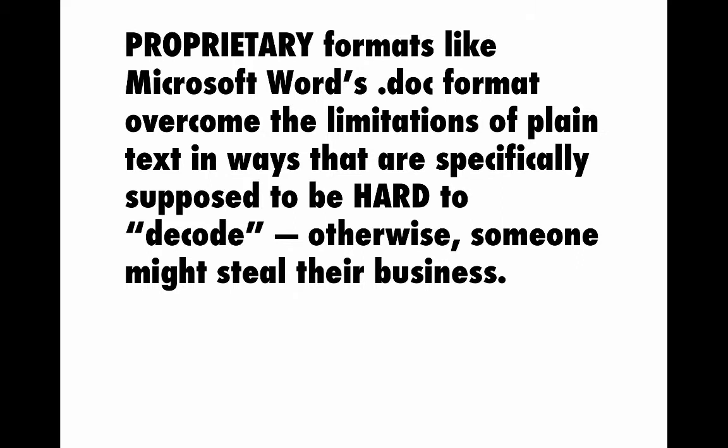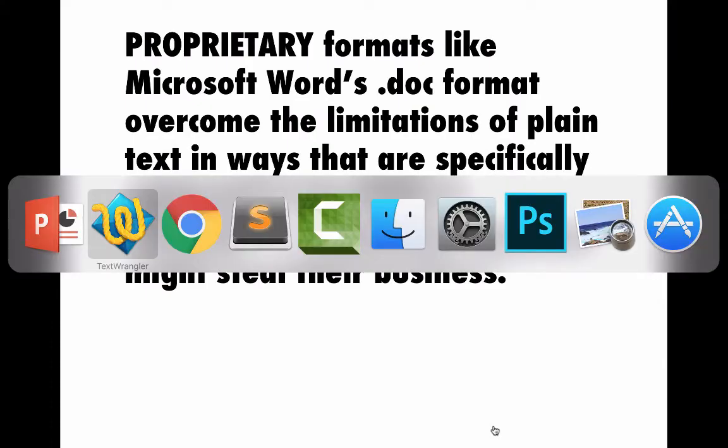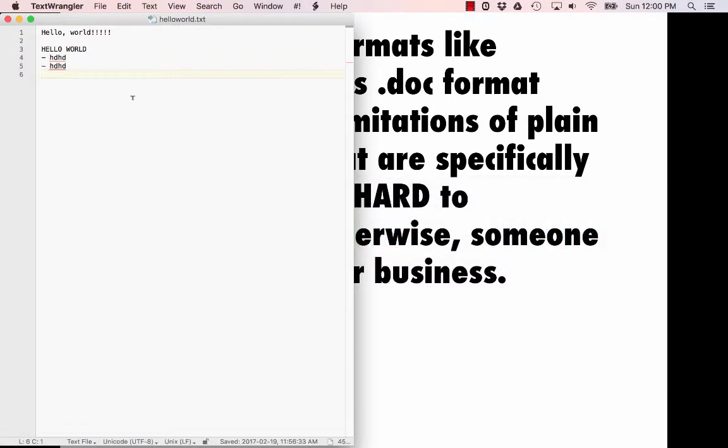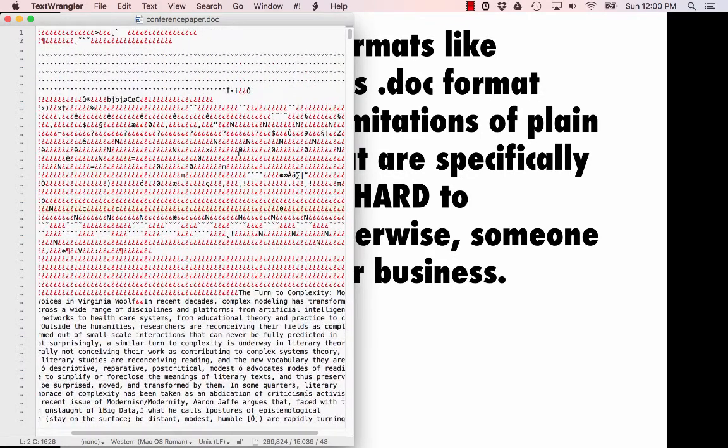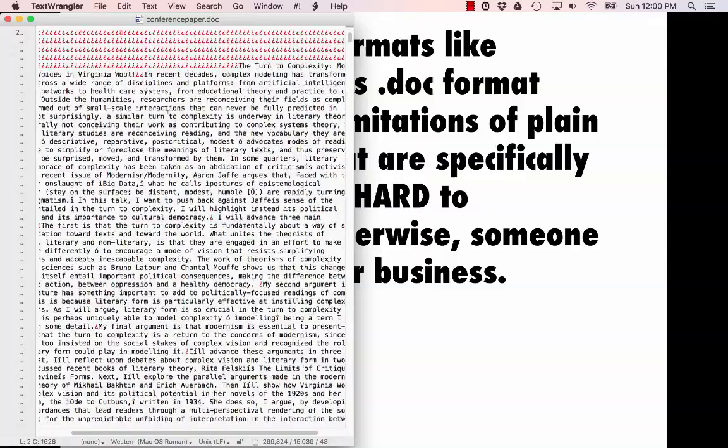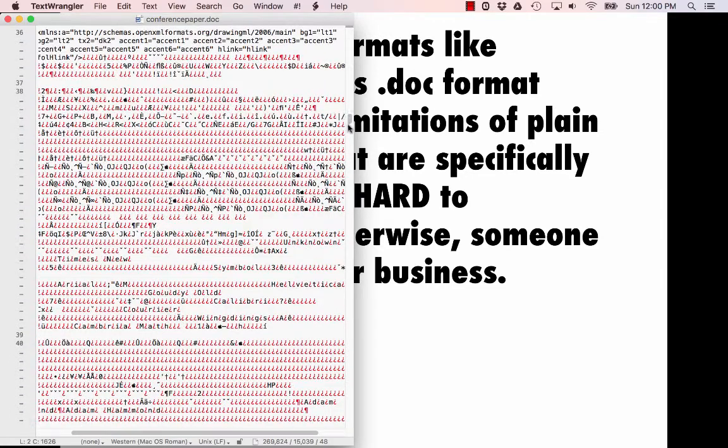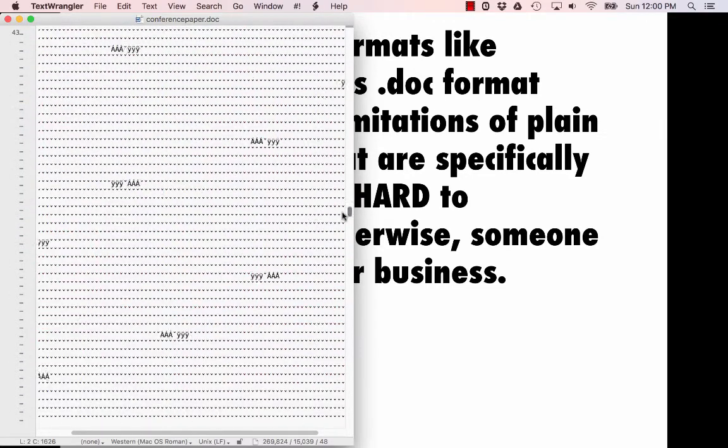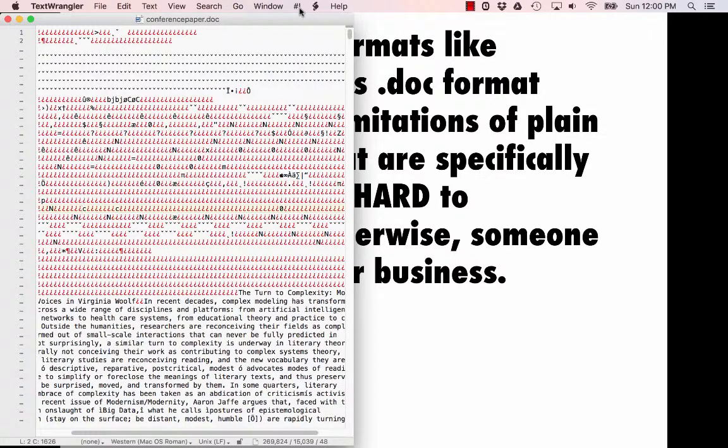When you open them up in a plain text editor, you're not supposed to be able to see what's going on. Their whole business depends on only a Microsoft browser can actually read what's going on. So for instance, here is a conference paper that I once gave, looking at it just as a Word file. Under the hood, you can see that it's a whole bunch of just complete nonsense that a human is not supposed to be able to read. I mean, you can see some of the text there, but so much of this file, like at least 80% of it is made up of characters that I don't understand.